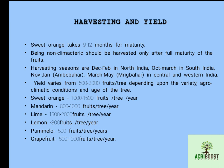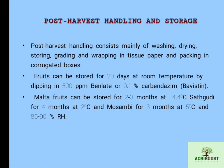Post-harvest handling consists of washing, drying, storing, grading, and wrapping of fruit using tissue paper, and packing in corrugated boxes. Fruit can be stored for 20 days at room temperature by dipping in 500 ppm of Benlate or 0.1 percent Bavistin. Malta fruits can be stored for 2 to 3 months at 4.4 degrees Celsius. Satgudi variety is stored for 4 months at 2 degrees Celsius. Mosambi is stored for 3 months at 5 degrees Celsius. Relative humidity should be 85 to 90 percent.